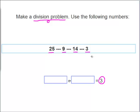What two numbers can we divide that equal 3? Yes, we can divide 9 by 3 because 9 divided by 3 equals 3.